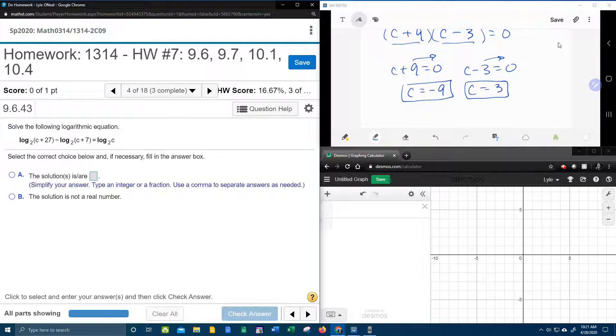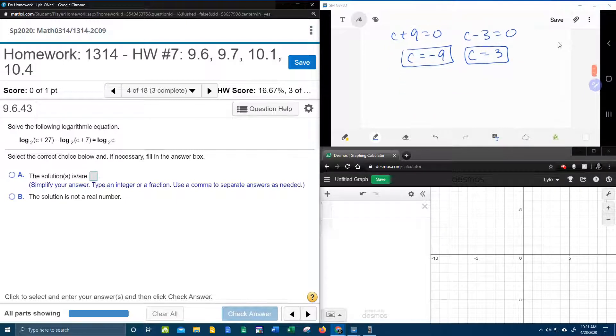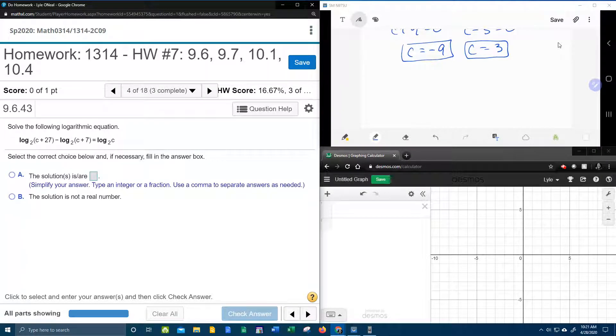Okay, so if these are both valid solutions, they should work in the original problem. And so what I'm going to do is I'm going to check these answers just to make sure that they are valid solutions. So going back to the original problem, we have log base 2 of c plus 27. And so I'm going to check the negative 9 first, replacing the c with negative 9.